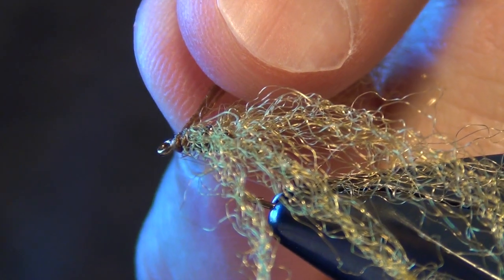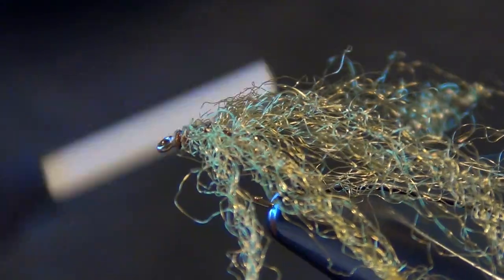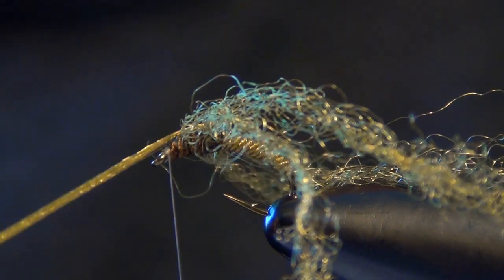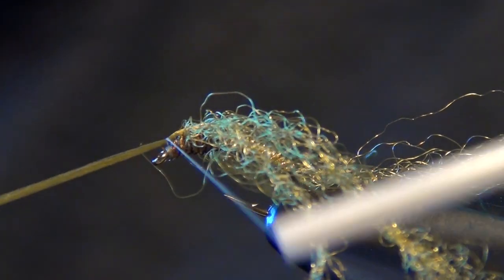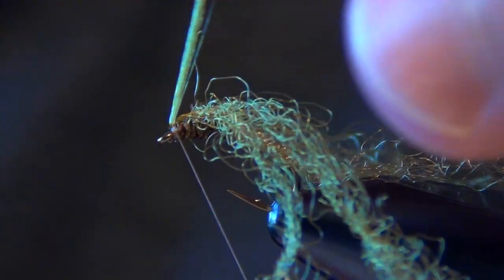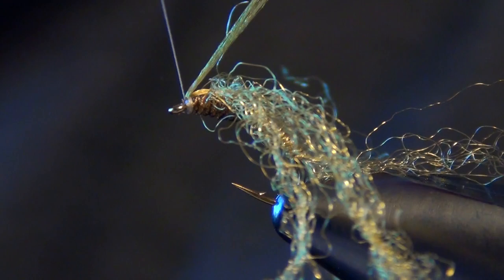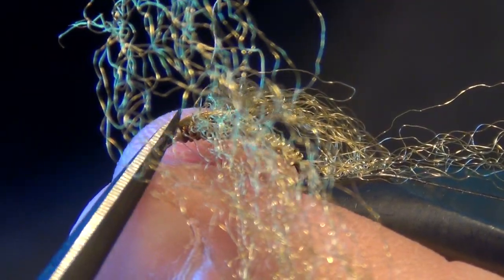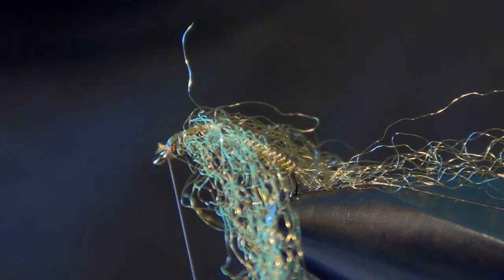Then we can trim out the Zelon used for the body. Now we're ready for our casing. I'm just going to draw that Zelon right over the top of the fly, pull nice and tight. I'll lay some wraps in front and behind that Zelon. Then you can trim that Zelon out of there very carefully, as close as you can without trimming your thread. Then we can whip finish.